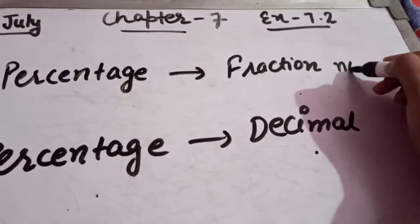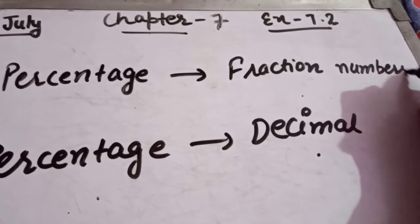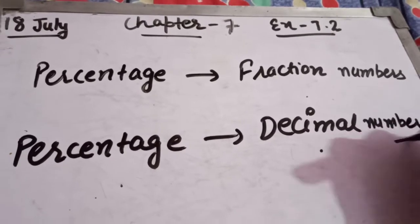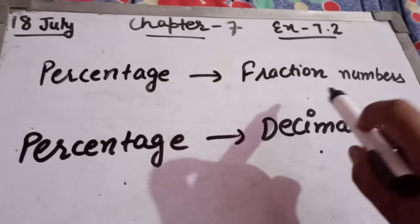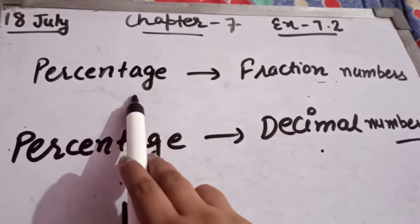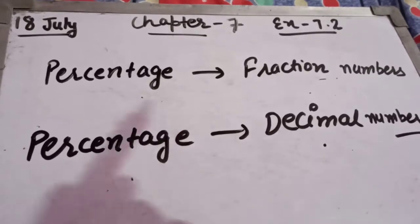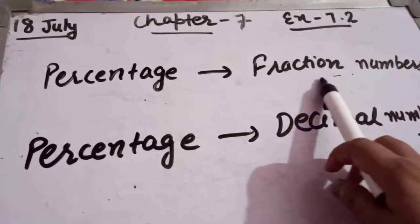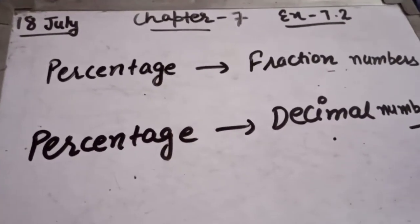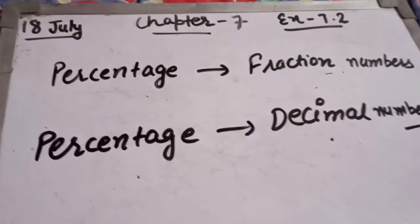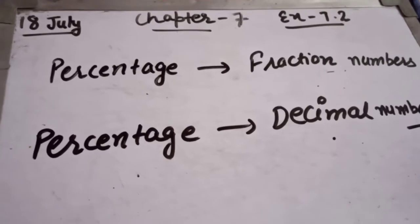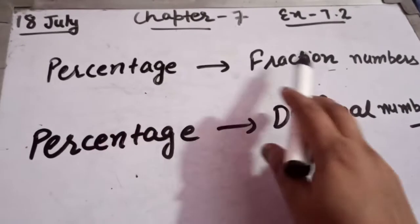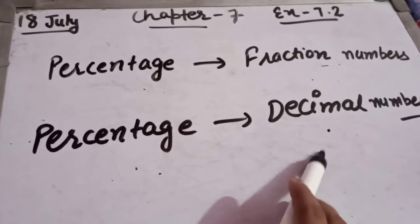We are covering fraction numbers and decimal numbers. In previous videos, we already studied how to convert a fraction number to percentage and decimal number to percentage — in exercise 7.1, we studied how to convert fraction numbers to percentage by multiplying with 100%. In this video, we will study how to convert percentage to fraction and percentage to decimal.